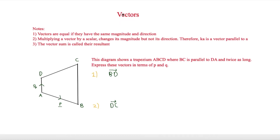Here's LimeSug and in this video we are looking at vectors. A few notes beforehand: vectors are equal if they have the same magnitude and direction. If you multiply a vector by a scalar — basically a number — it changes its magnitude but not its direction. This means that ka, where k is a constant, is parallel to a, as they have the same direction but not the same magnitude. The vector sum is called the resultant.